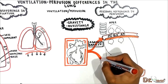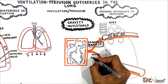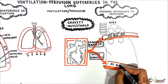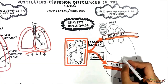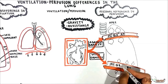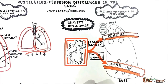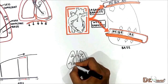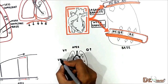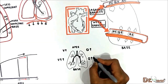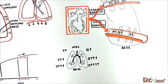When blood flows down toward the base, gravity assists blood flow so pressure and flow both increase. Because the vessels are more distended and the alveoli are small, there is low resistance, so pressure and flow increase further. To summarize: as you move from apex to base, both ventilation and perfusion increase. However, the increase in perfusion is greater than the increase in ventilation toward the base of the lung.